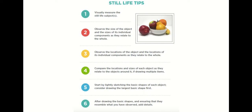Here are some still life tips for drawing. First, visually measure your still life objects — for example, if you have an orange and a watermelon, the orange should be portrayed much smaller than the watermelon since watermelons are larger. Observe the sizes of objects and their individual components as they relate to the whole. Compare all objects as you draw each one so they are proportionate and feel like they fit together.